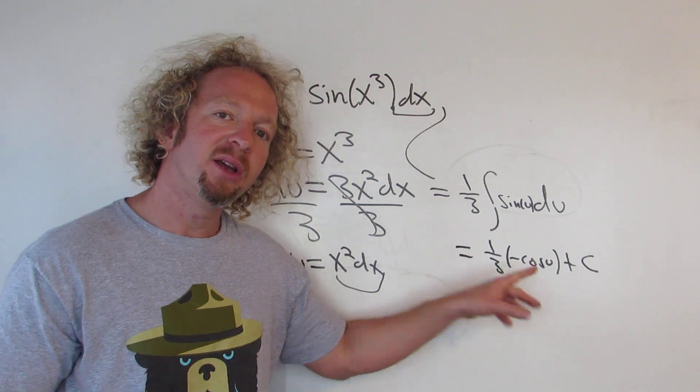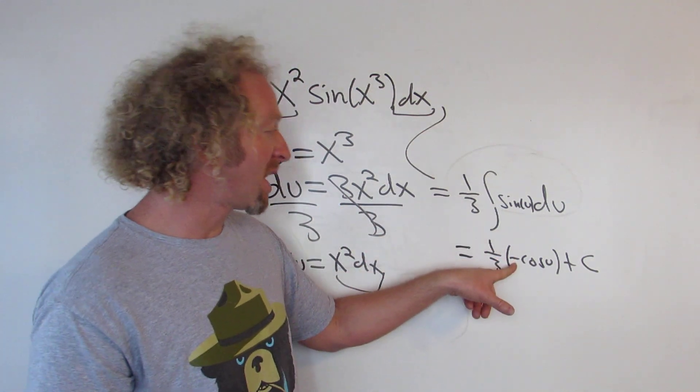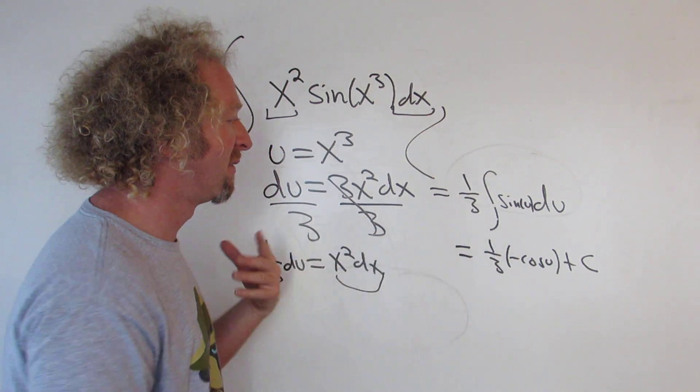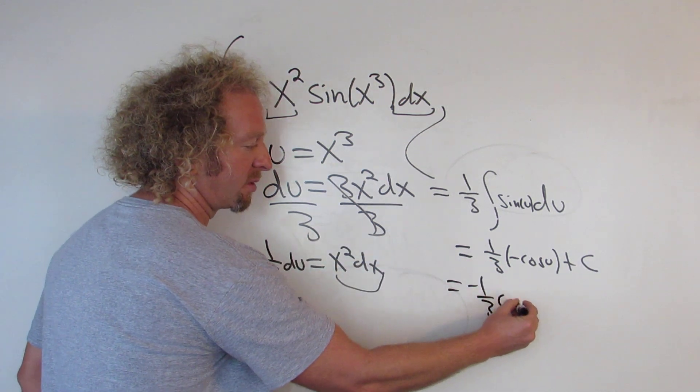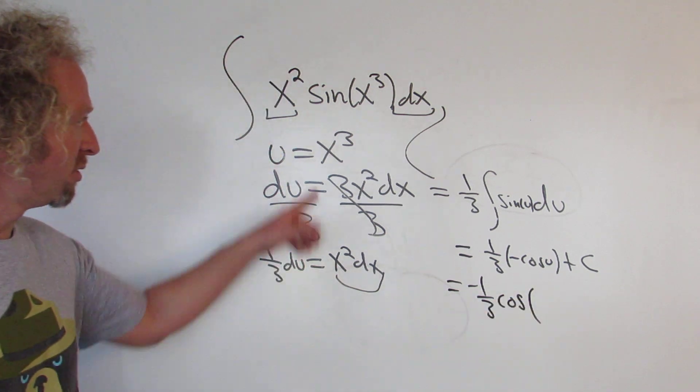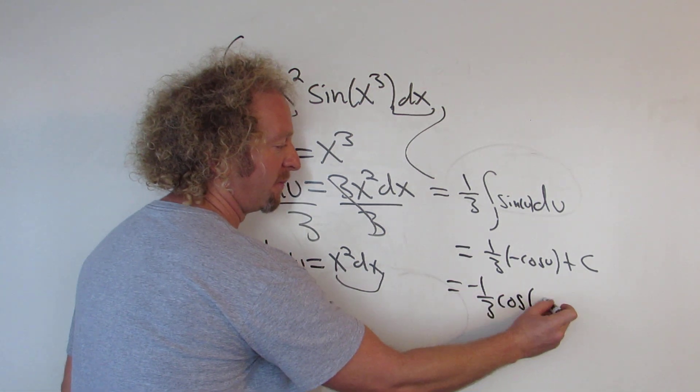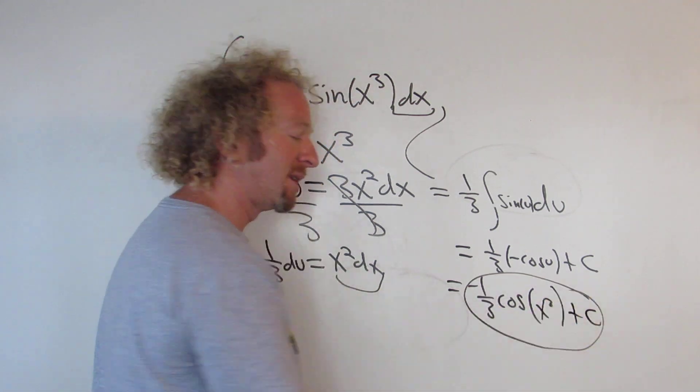You can take the derivative of cosine, you get negative sine. We already have a negative, so negative and negative is positive. The last thing we can do is pull out that negative 1. So we end up with negative 1 third cosine, and then we said u was x cubed, so that'll be x cubed. And then don't forget plus C. That's it.